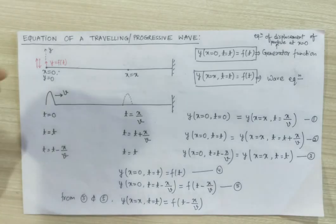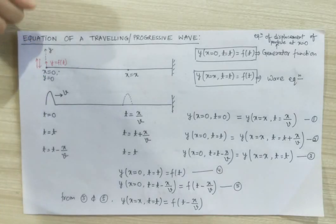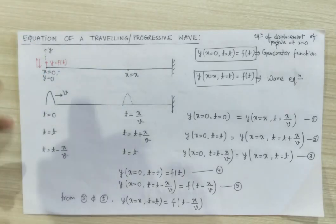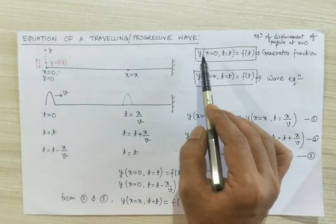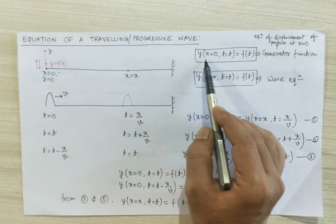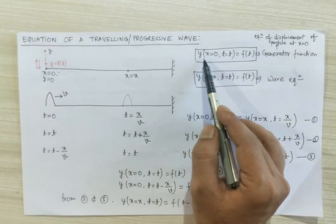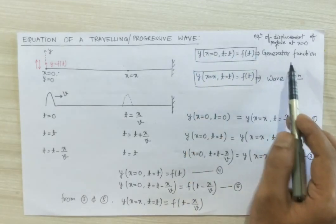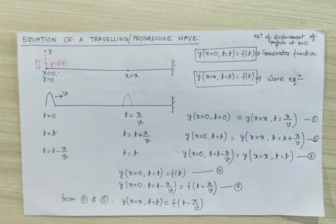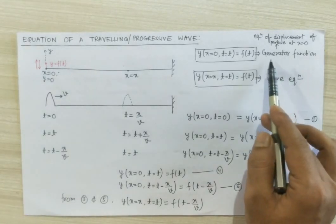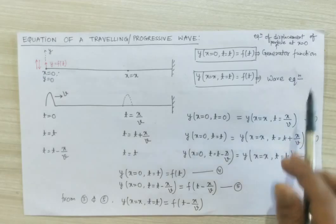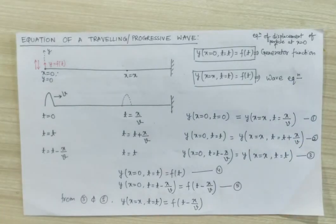During the motion of my hand up and down, the displacement of the free end of the particle is a function of time. The displacement of the particle at the free end, that is at x equal to 0 at time t, is a function of time, and this function is called the generator function. The generator function is simply the equation of displacement of the particle at x equal to 0, or displacement of the particle at the free end.